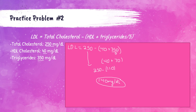140 milligrams per deciliter is an increased level of LDL, which makes sense because looking at the other lipid results — total cholesterol, HDL, and triglycerides — there are obviously some issues going on. So it makes sense that the patient's indirect LDL would be elevated. That's practice problem number two.